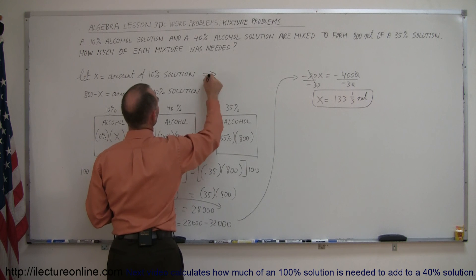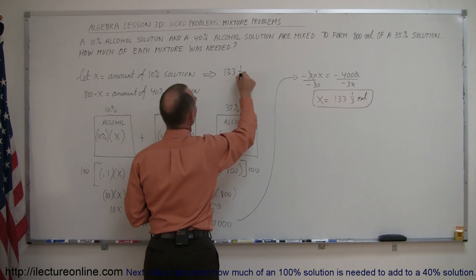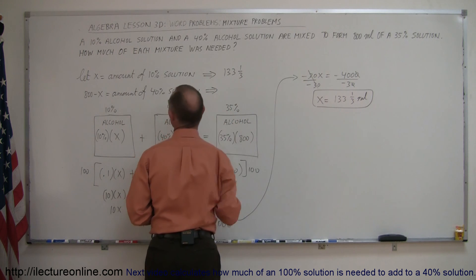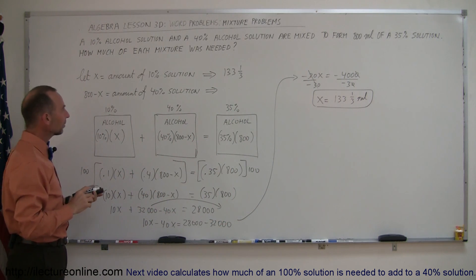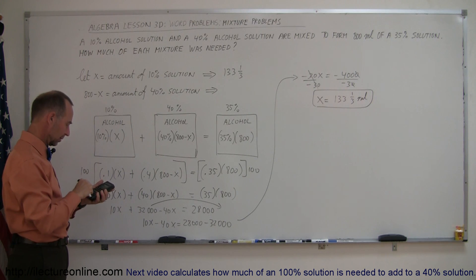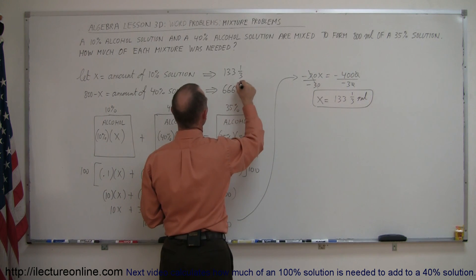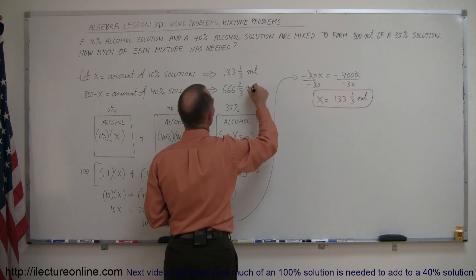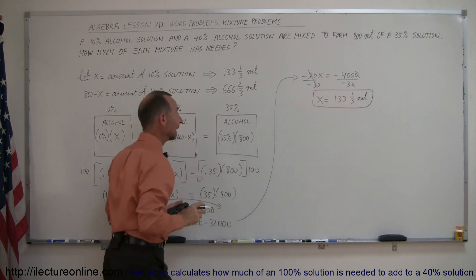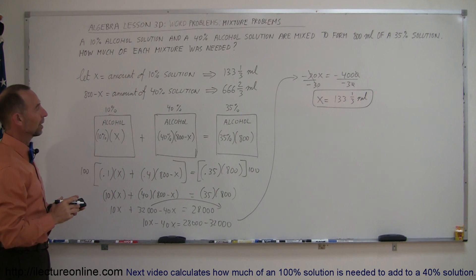So how much of the 10% solution do we need? We need 133 and a third milliliters. And how much of the 40% solution? That's 800 minus 133 and a third, which equals 666 and two-thirds milliliters. That's how you find the answer to this problem.